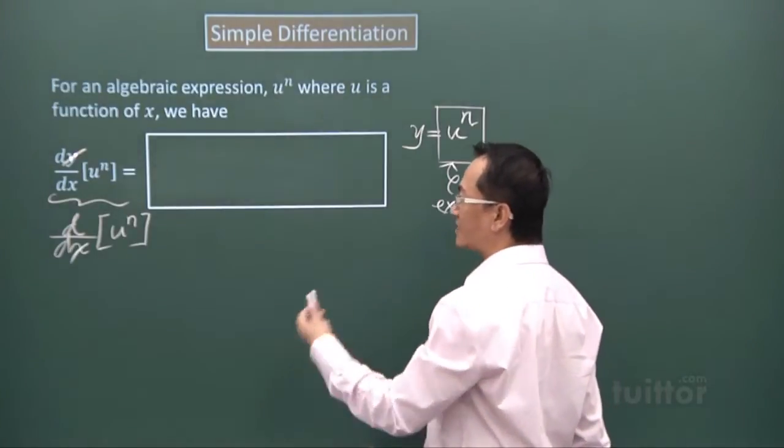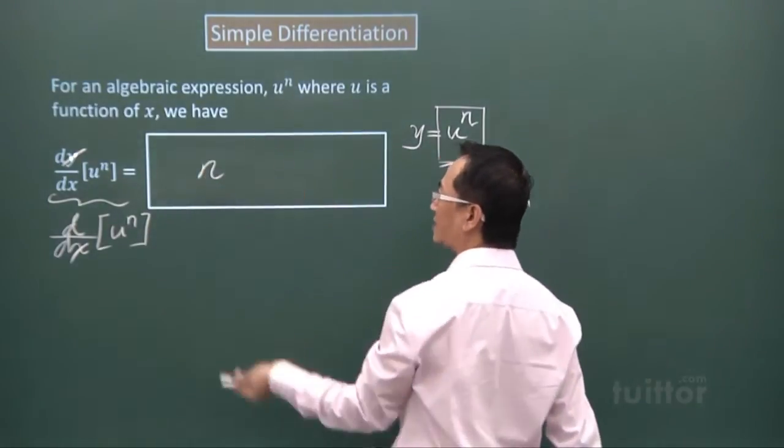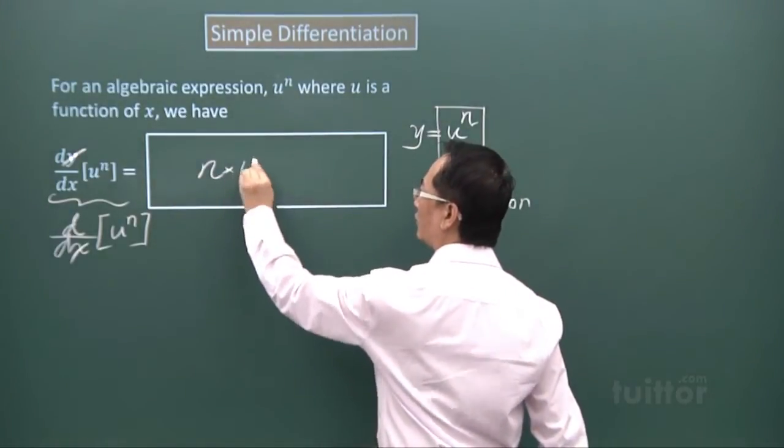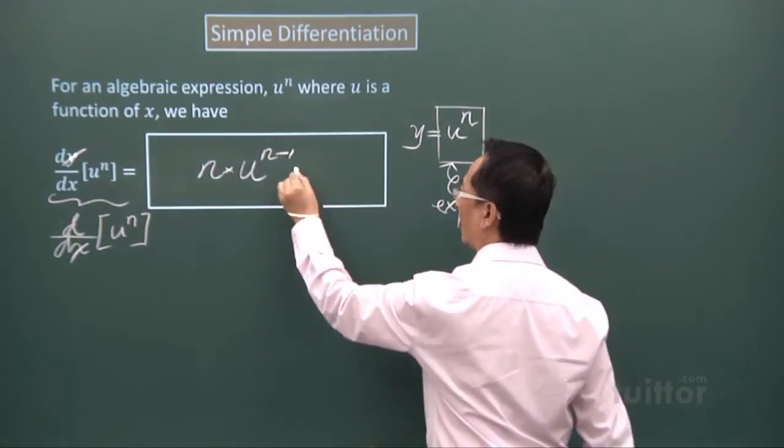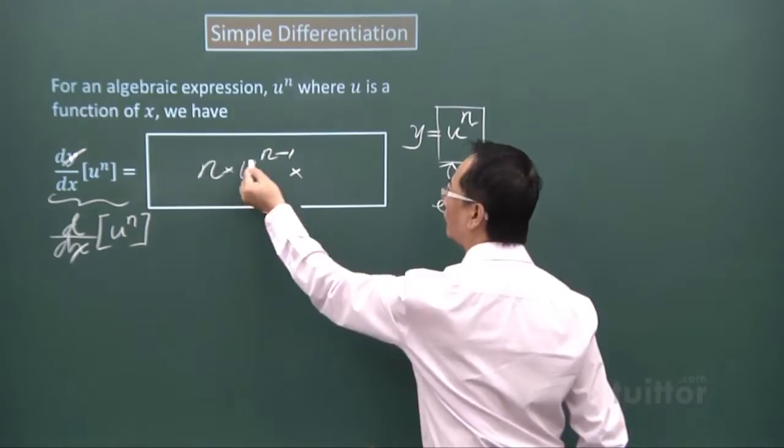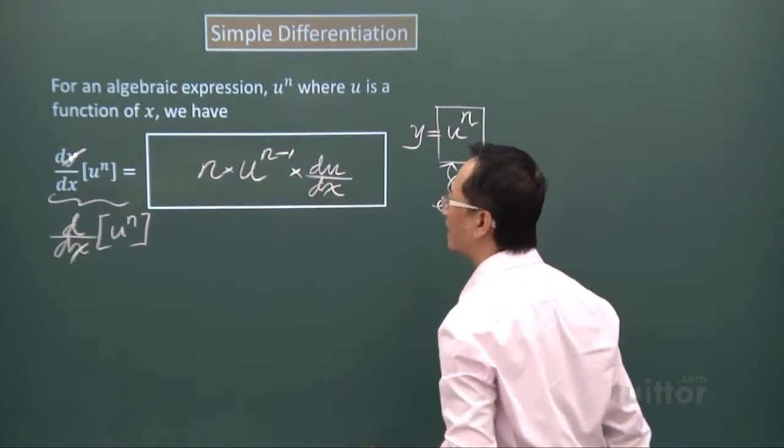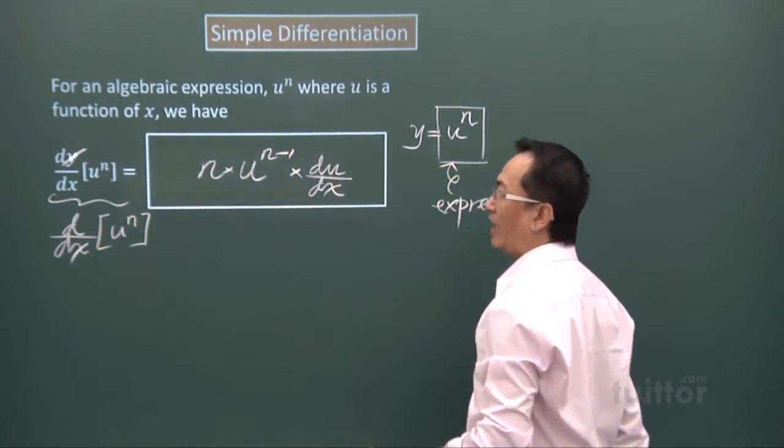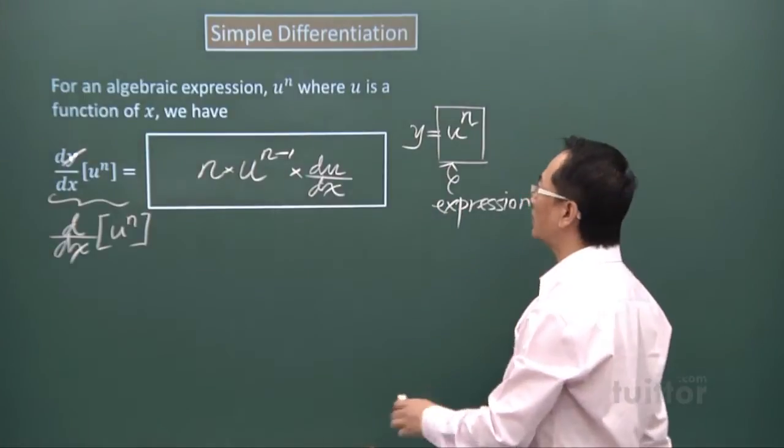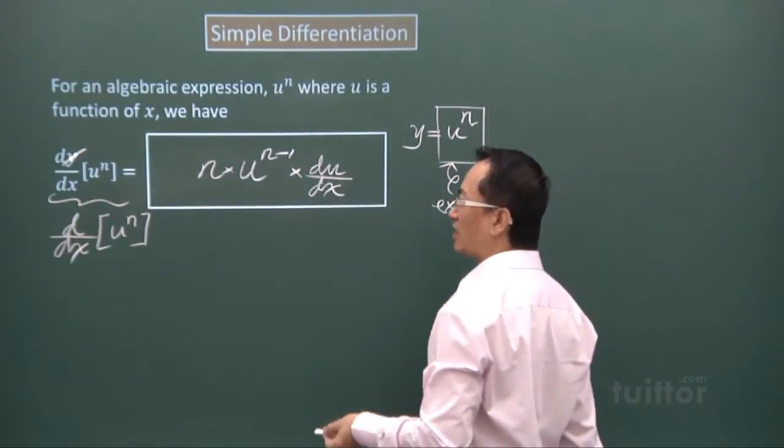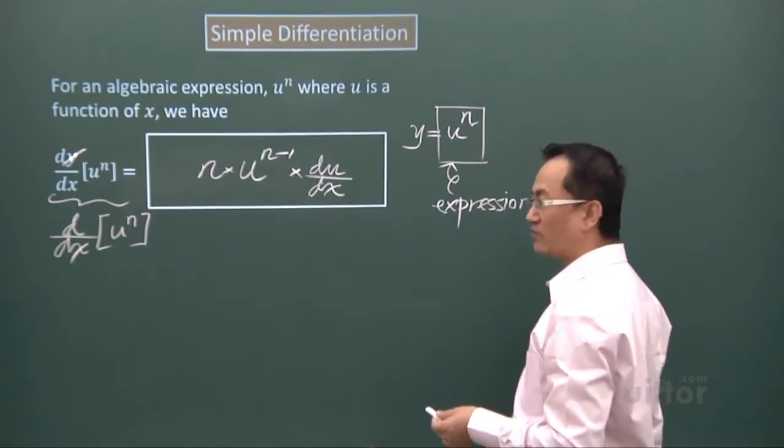Here you follow the same idea: the index you write first, multiply to u to the power of n just as it is, but reduce the power by one, then followed by du/dx. You can see there's no difference in the expression except in the symbol. In the previous case, dy/dx because you're given the whole equation. For the expression, you just write d/dx, which is to say differentiate the bracketed item with respect to x.